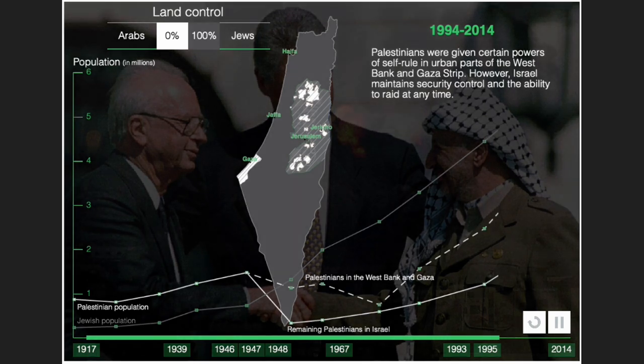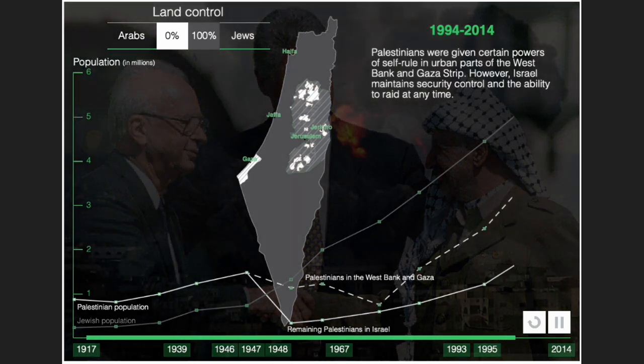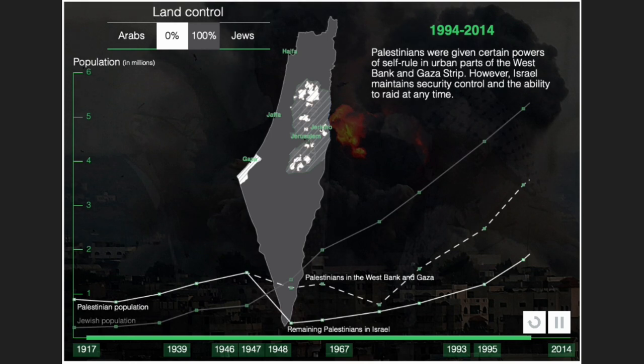From 1994 to 2014, Palestinians were given certain powers of self-rule in urban parts of the West Bank and Gaza Strip. However, Israel maintained security control and the ability to conduct raids at any time.